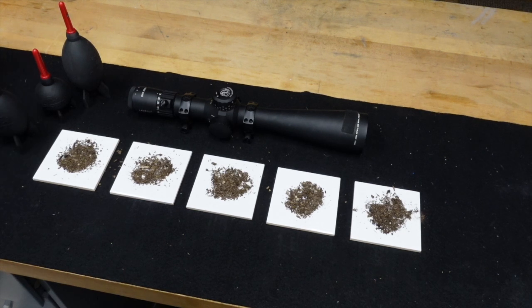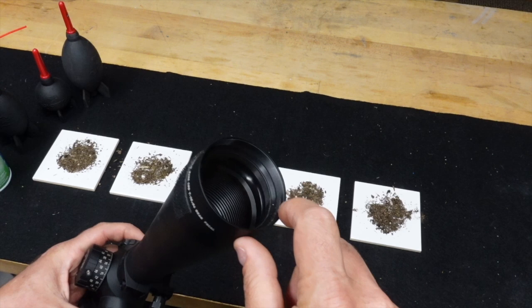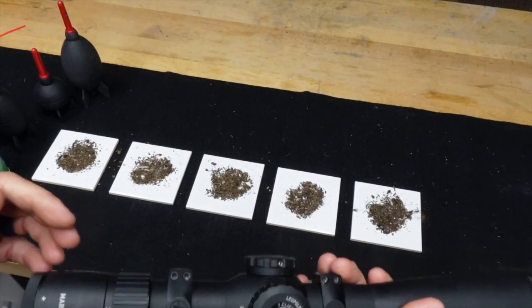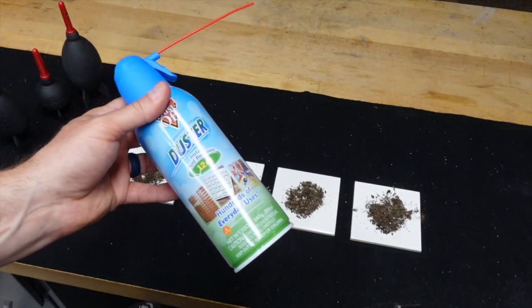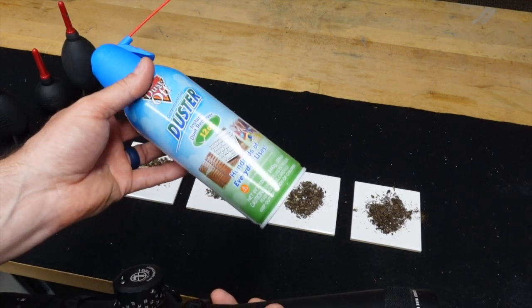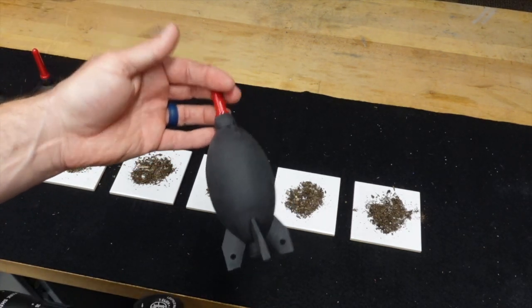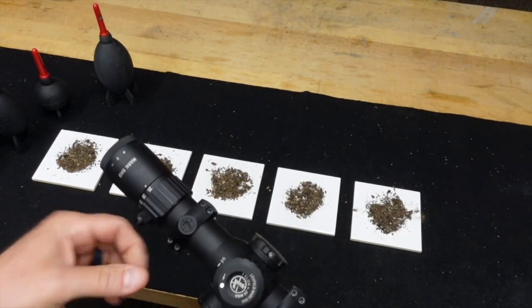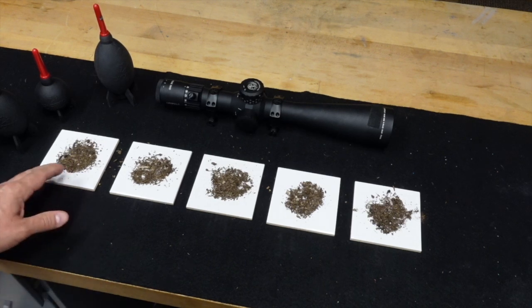I wanted to do a very super unscientific test just to show you how different things compare in terms of cleaning dust off of a scope. At any given time when you're at a match you could find yourself with a little bit of dirt in here in this objective, or maybe your action needs to get a little dust blown out of it. That's where I've always turned to an air duster. I've always kept one of these in my range bag and I can tell you that I've now replaced it with one of these.